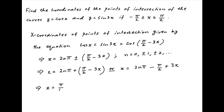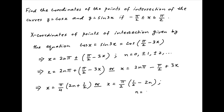In the first case, x = (π/4)(2n + 1/2). And in the second case, x = (π/2)(1/2 − 2n), where n takes values 0, ±1, ±2, and so on.